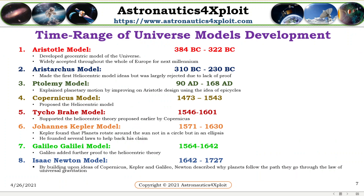Time range of universe model development. Aristotelian model: Aristotelian developed a geocentric model of the universe. Its model was widely accepted throughout the whole of Europe for the next millennium. Aristotelian also made the first heliocentric model ideas, but was largely rejected due to lack of proof. Tholemy model: Tholemy explained planetary motion by improving on Aristotelian design using the idea of epicycles.